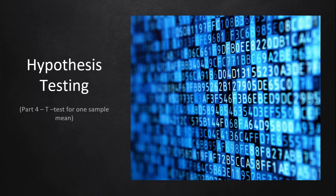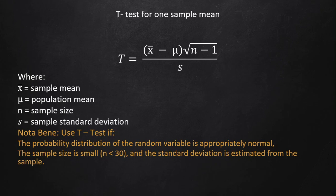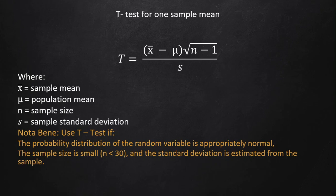This is the formula for the t-test for one sample mean: t equals the sample mean minus the population mean, multiplied by the square root of n minus one, divided by s, which stands for sample standard deviation. It's somewhat the same as the z-test formula, but the difference is that you subtract one from n and use sample standard deviation instead of population standard deviation.